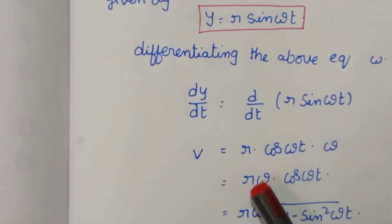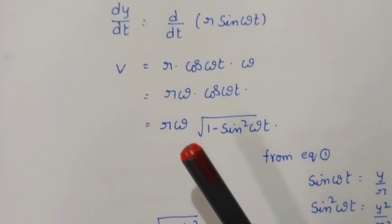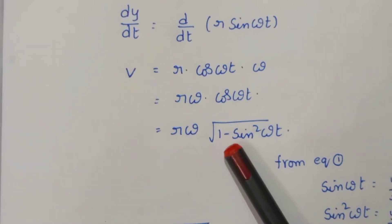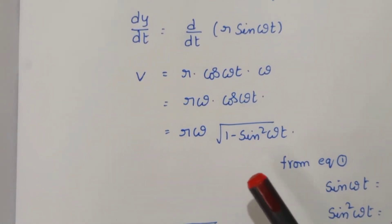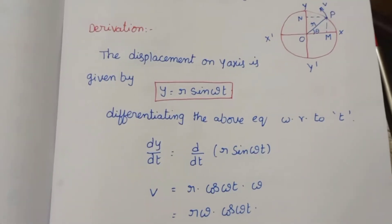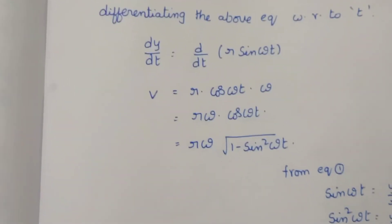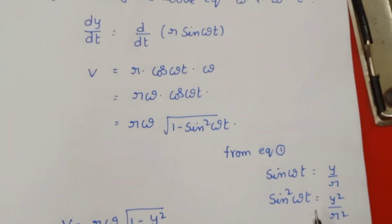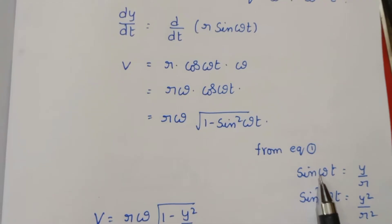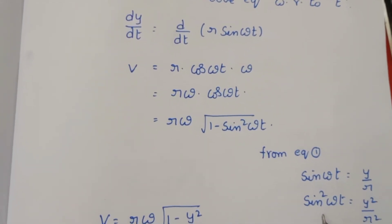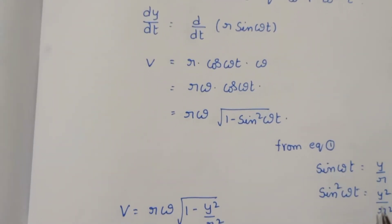So the constant value gives r·ω·cos θ. Now we express cos θ in terms of sin: cos θ = √(1 − sin²θ). Substituting from equation 1, y = r·sin(ωt), we get sin(ωt) = y/r, and therefore sin²(ωt) = y²/r².